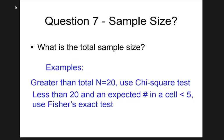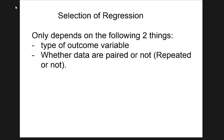So questions one through seven — we quickly went over them, though I usually spend more time. Questions one through seven cover univariate test selection. We haven't talked about selection of regression, which is actually very easy — much easier than selecting a univariate test.